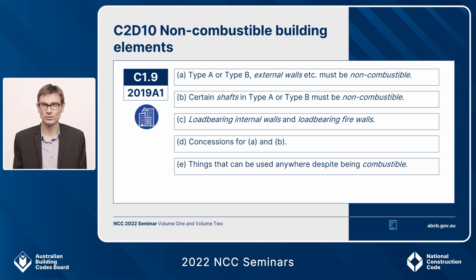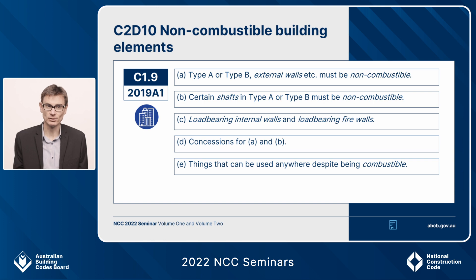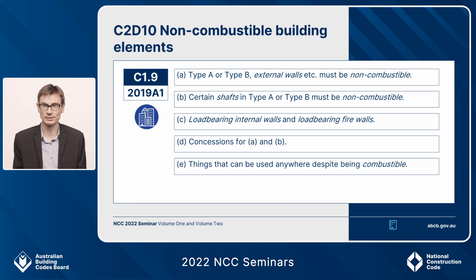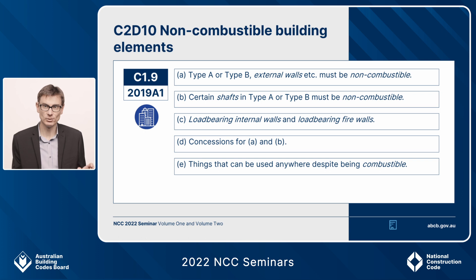The first change to show you is C2D10 non-combustible building elements, currently known as C1.9 in NCC 2019. It's been structured this way for a long time. Subclauses A and B set out things that have to be non-combustible — external walls, shafts, flooring of lift pits and similar. Subclause C points to Spec C1.1 for load-bearing internal walls and firewalls and their combustibility requirements. Subclause D has a small number of concessions from the non-combustibility requirements of A and B.